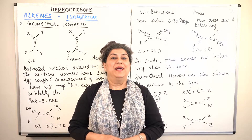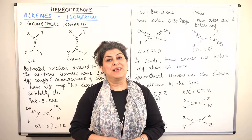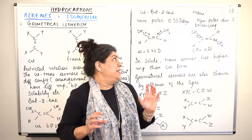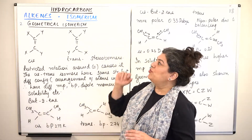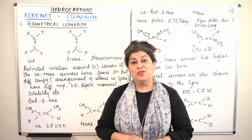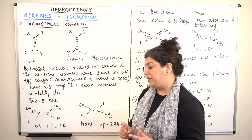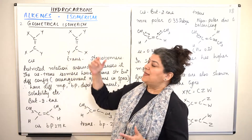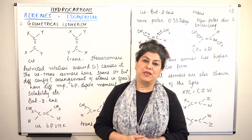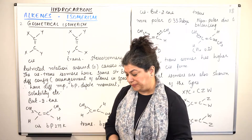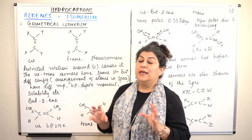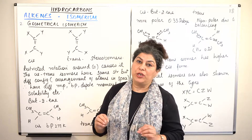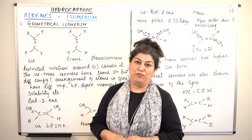Hello, I'm Seema and welcome to part 18 of the chapter hydrocarbons. In part 17 we were discussing isomerism in alkenes, and I told you that alkenes show two types of isomers: structural isomerism and geometrical isomerism. Isomers are compounds that have the same molecular formula but different structural formula.